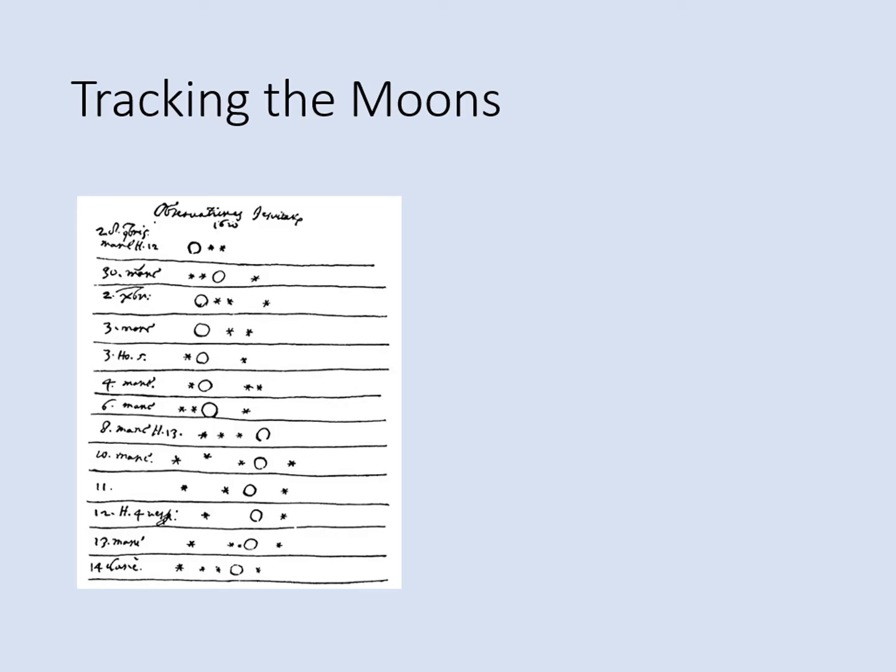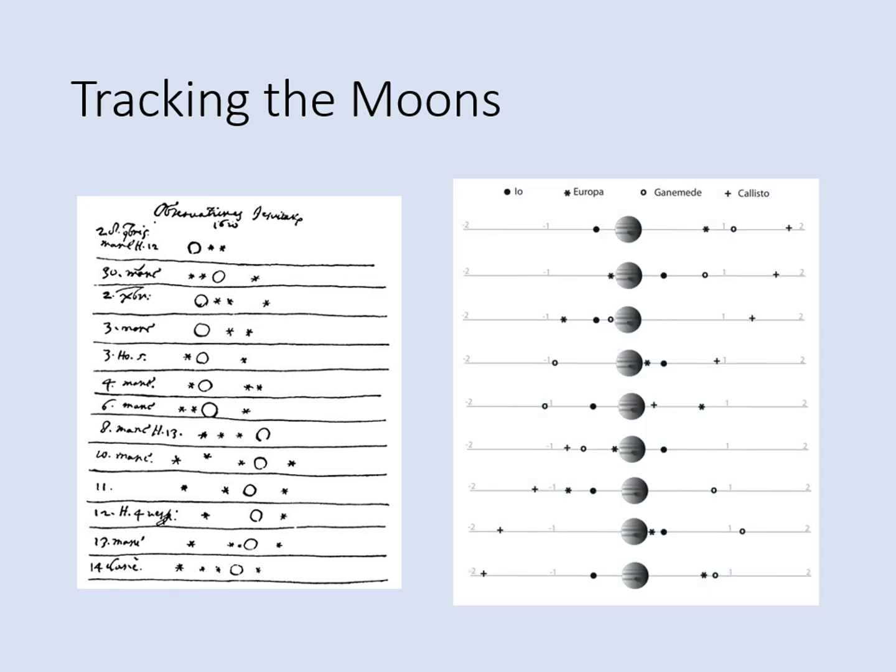Let's have another look at that page of observations from Galileo's notebook. What Galileo did here is draw pictures of Jupiter and its moons night after night on the same page. As you follow down the page, you're seeing Jupiter's moons move around the planet over time. Imagine we took a bunch of observations like the ones in these drawings, but made sure we did them every night — you'll see that Galileo missed a few nights. Let's line up the diagrams so that Jupiter is always in the same place in the middle, and add labels for each of the moons so that we know which one is which. In that case, we get a picture like the one on the right.